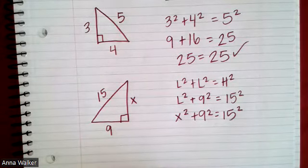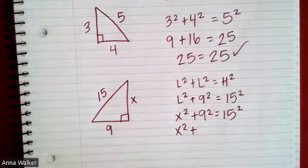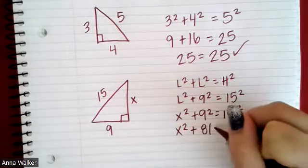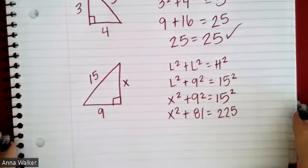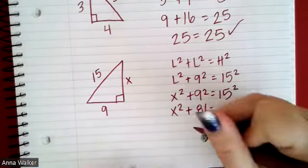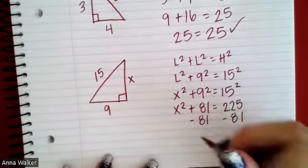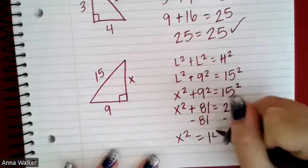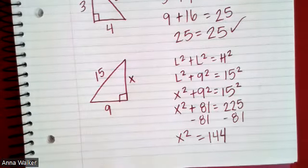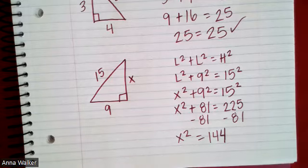So I have x² + 9² = 15². Nine squared is 81, and 15 squared is 225, giving me x² + 81 = 225. Using the subtraction property of equality, I subtract 81 from both sides and get x² = 144.